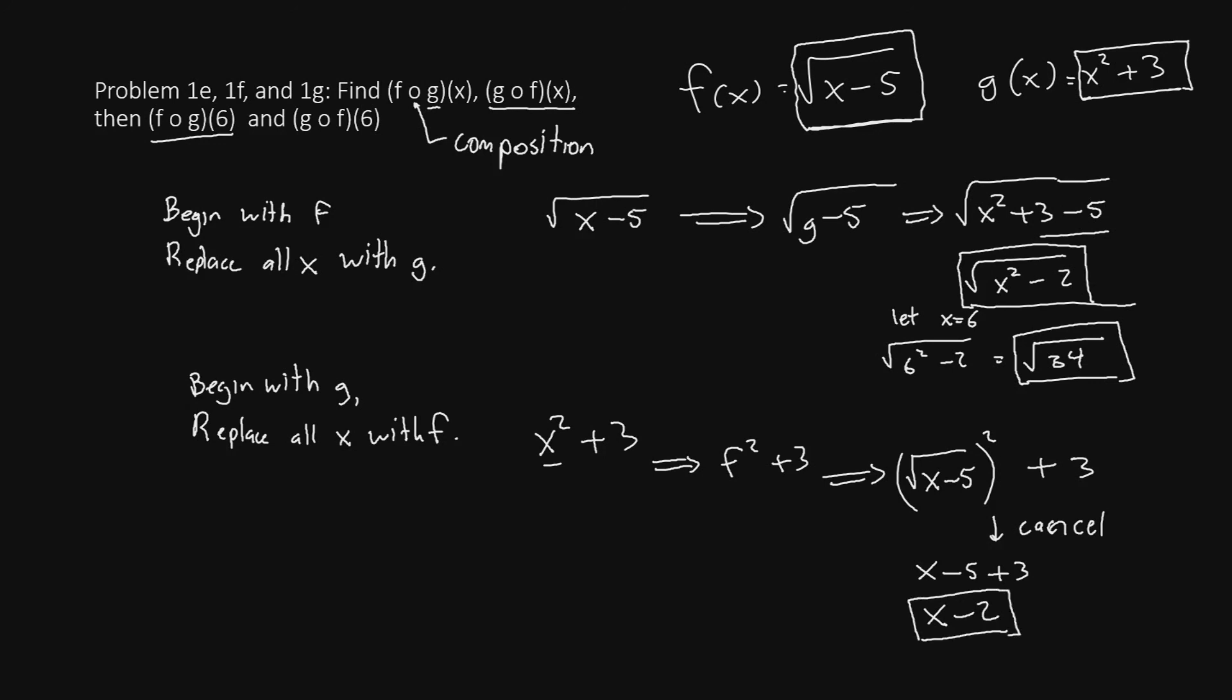This is our composite function after all is said and done. Now if we let x equal 6, we'll have just 6 minus 2 is 4.